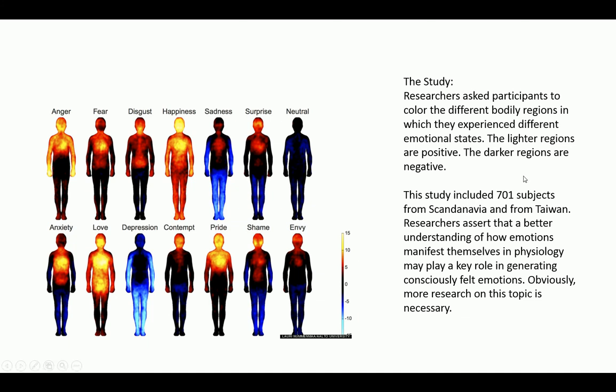Obviously we experience those emotions in a number of different ways — it can be elevated heart rate, skin transference, how much oxygen we're taking in through our skin, how much ability to regulate temperature we have in our sweat glands. Any number of different responses from the sympathetic or parasympathetic nervous system can generate a physiological response to an emotional state.